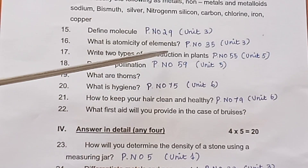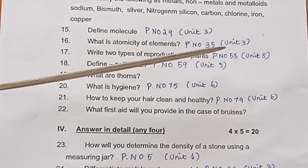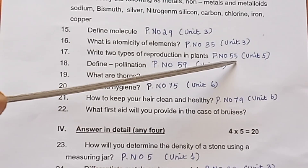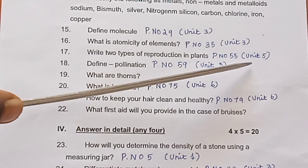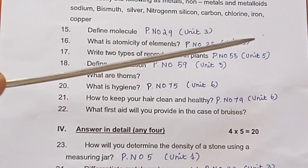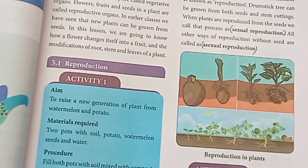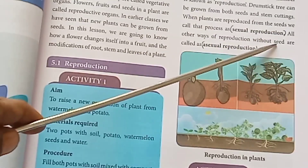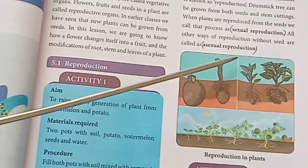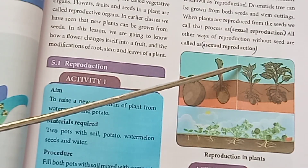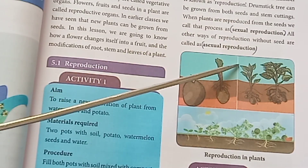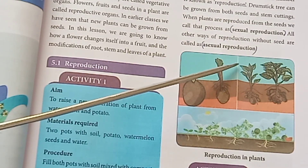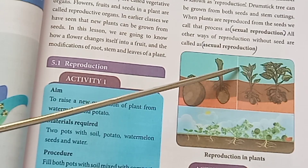Question 17: Write 2 types of reproduction in plants. Page number 55, Unit 5. Answer: Sexual reproduction and asexual reproduction are the two types of reproduction in plants.